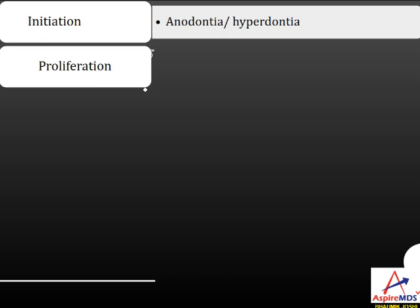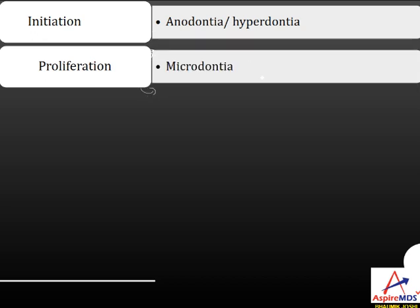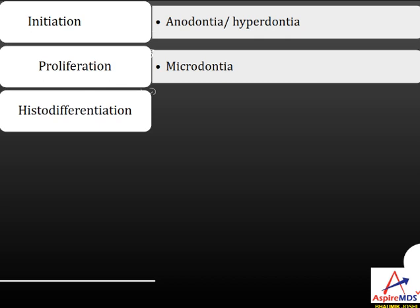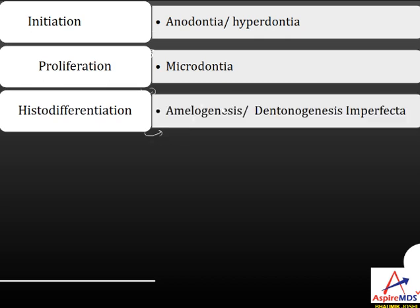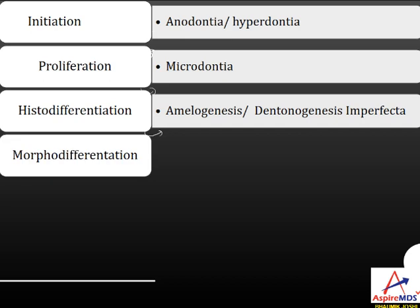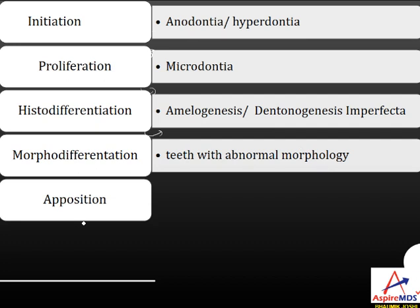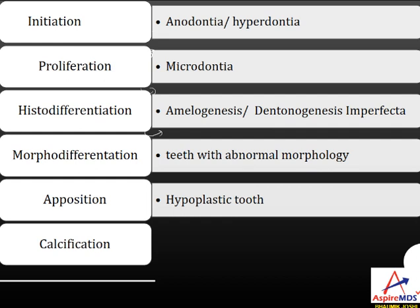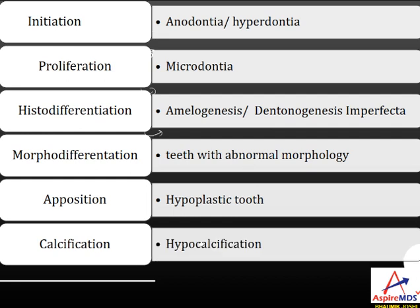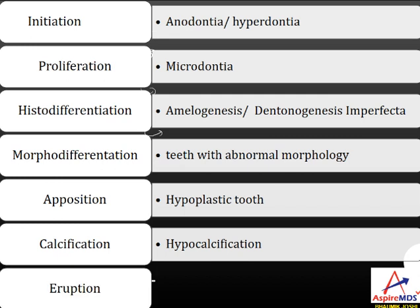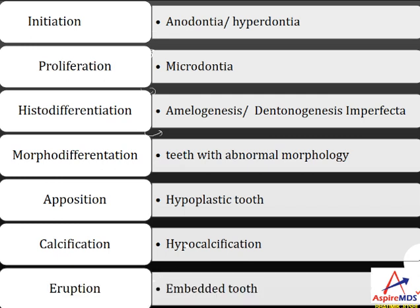If the proliferation stage is affected, it can lead to microdontia or macrodontia. During histodifferentiation, defects lead to amelogenesis or dentinogenesis imperfecta. Morphodifferentiation defects result in teeth with abnormal morphologies — either extra cusps or extra roots. Defects in apposition lead to hypoplastic teeth, defects in calcification lead to hypocalcification, and defects in eruption lead to embedded or impacted teeth.